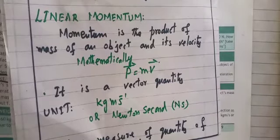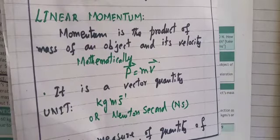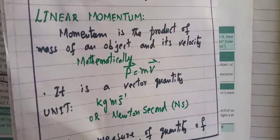Remember that mass (m) is a scalar quantity, and velocity (v) is a vector quantity.